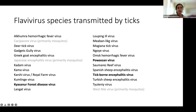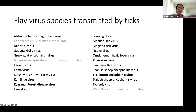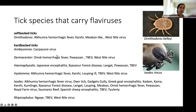Tick-borne flavivirus species include viruses with interesting names like Gadgets Gully virus, Greco encephalitis virus, and Kyasanur Forest disease virus. Probably the most studied are Powassan virus, found in North America and parts of Asia, and tick-borne encephalitis virus. All of these are somewhat related phylogenetically, which we'll explore in more detail shortly.